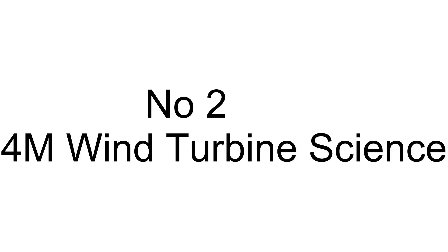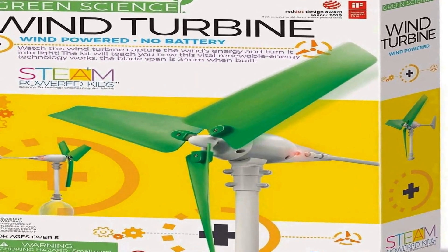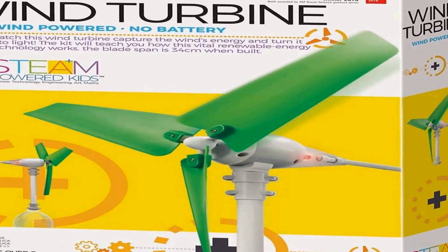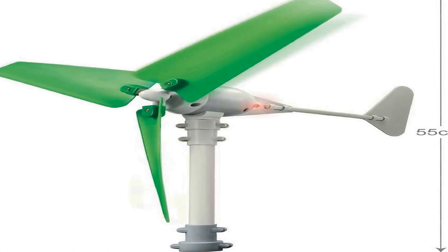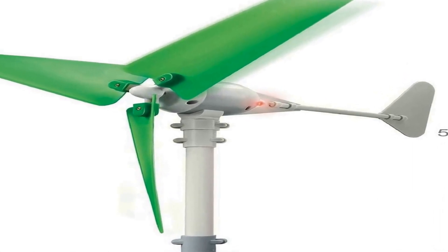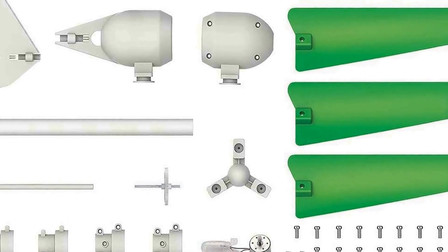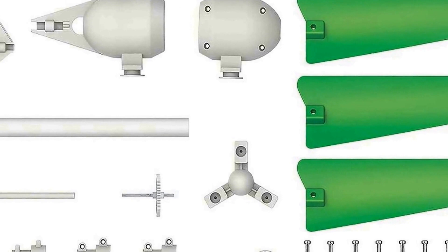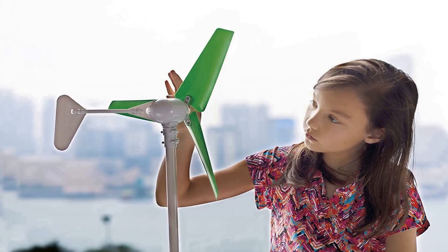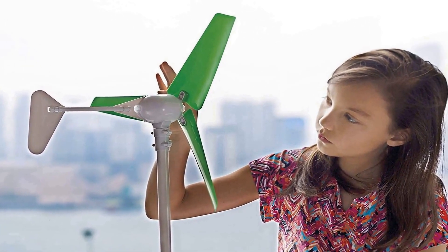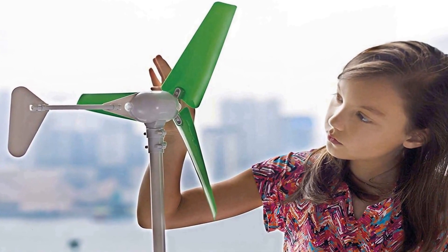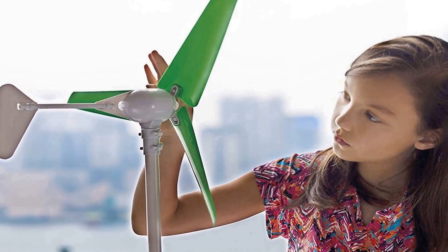The number 2 on the list has many positive reviews on different forums and communities. With the 4M Wind Turbine Kit, you can harness the power of wind and convert it into electricity by building your own turbine. This kit teaches how renewable energy technology works in a fun, recreational way. When assembled, the blade has a span of 13.3 inches. It requires an empty 2-liter soda bottle and a small Phillips head screwdriver. Recommended for ages 8 and up.